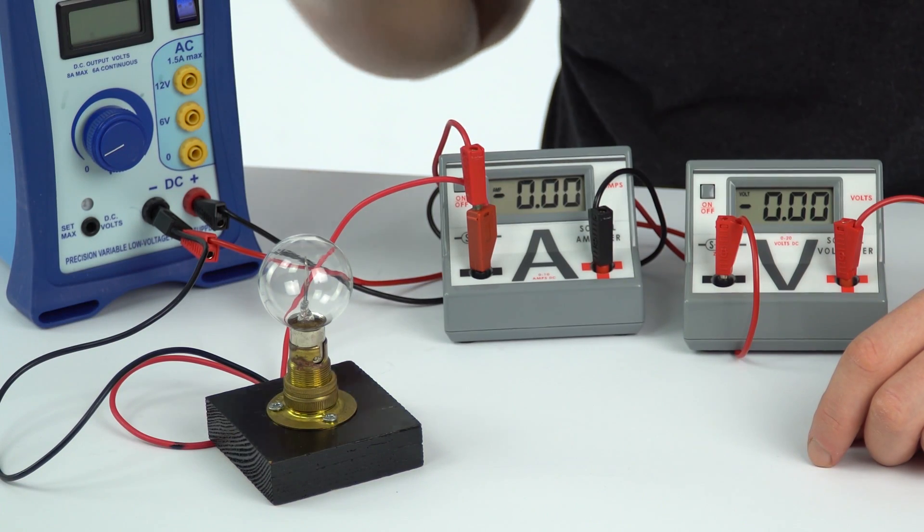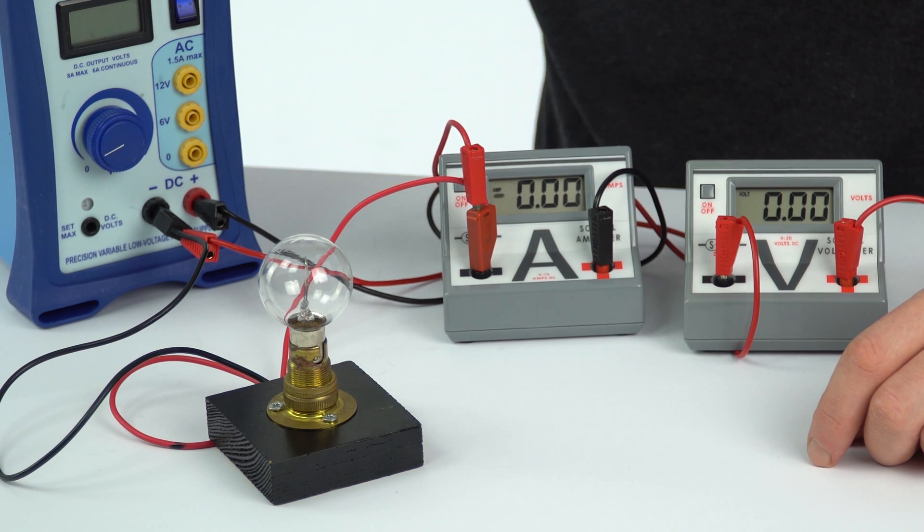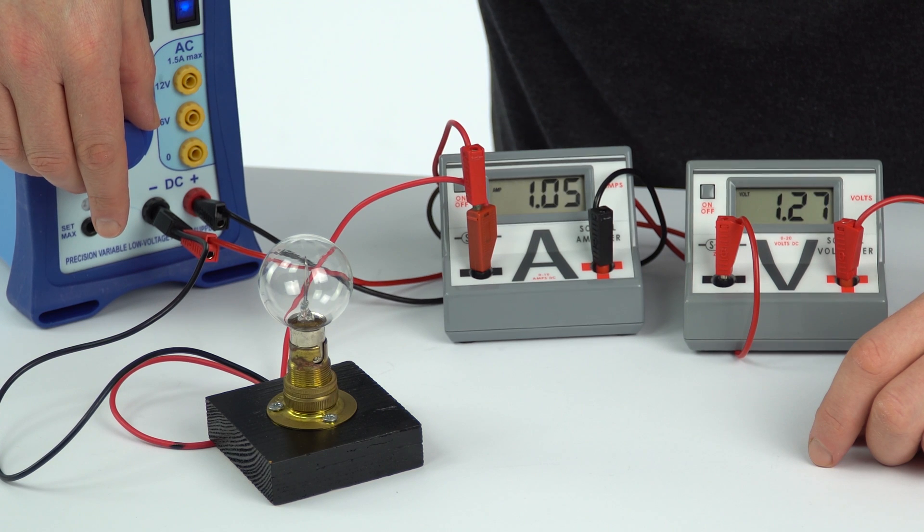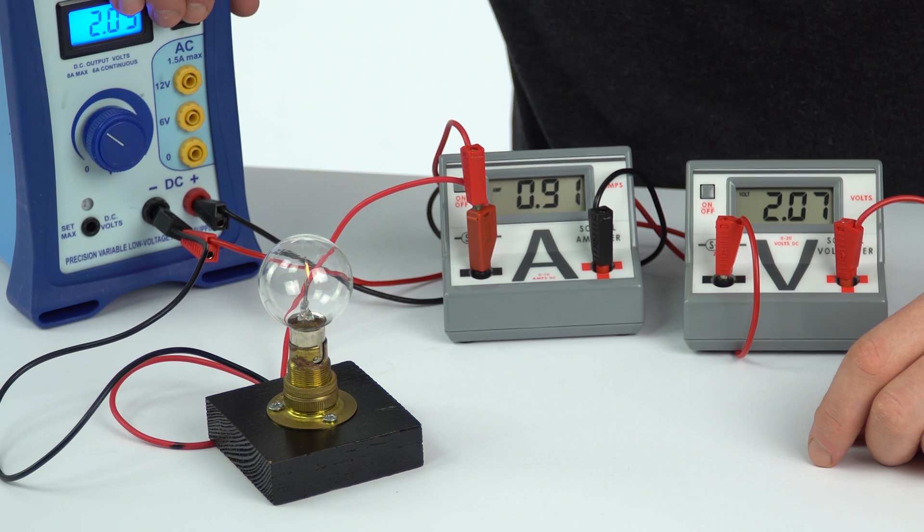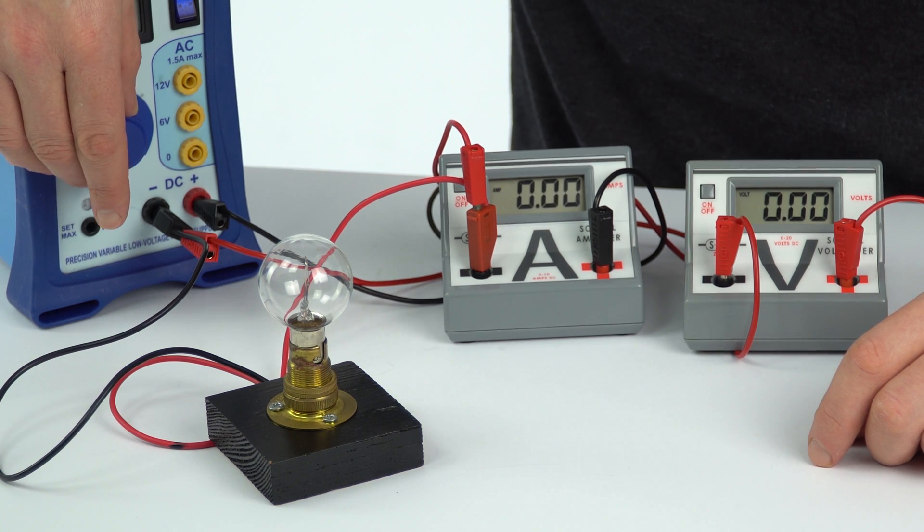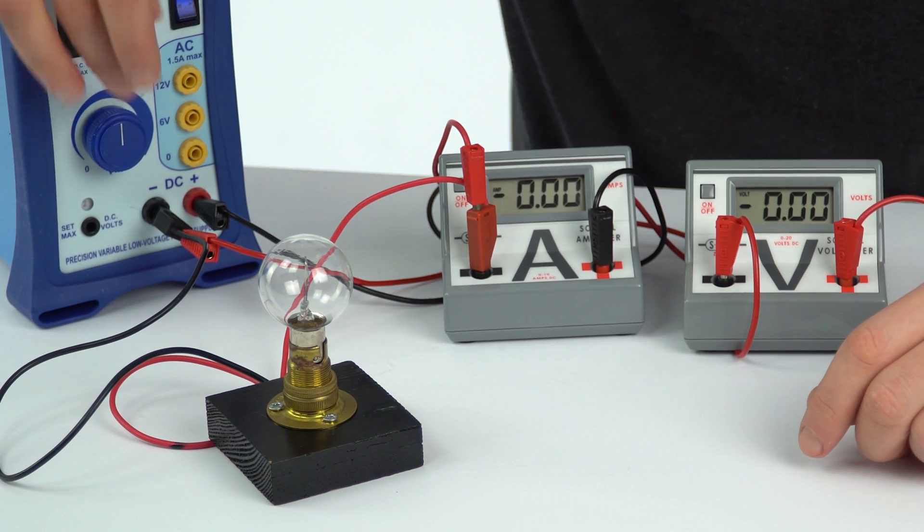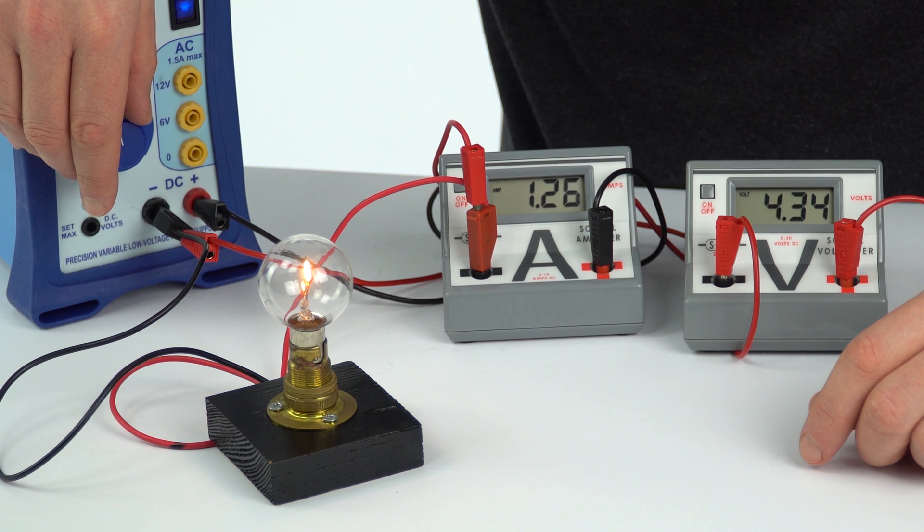So with the power supply turned off we've got zero volts and zero current so that's one of the bits of data we need. I'm going to turn this on and adjust it to about two volts. There we go and what I'm going to be doing is turning off the power supply in between readings and that stops this getting too hot. So now I've adjusted it slightly and we've now got a value of about four.